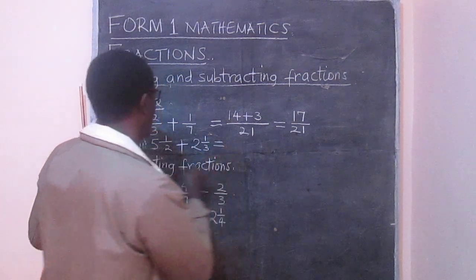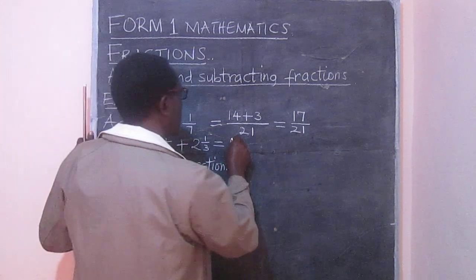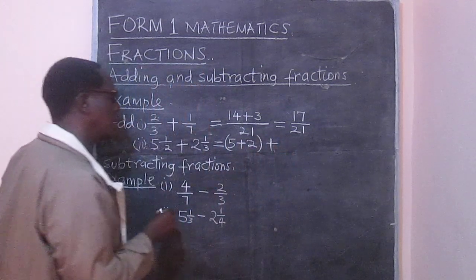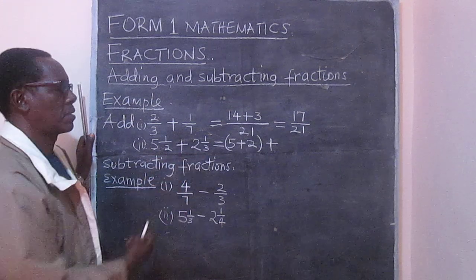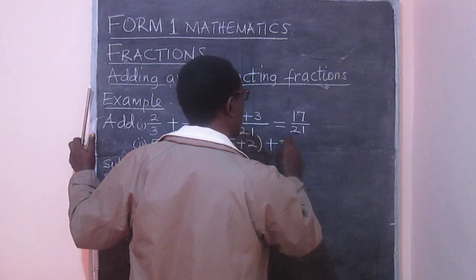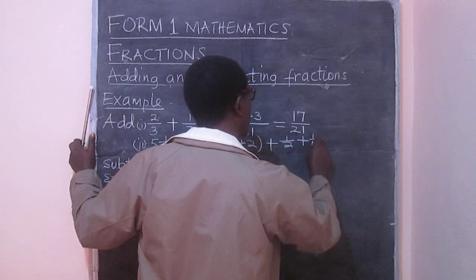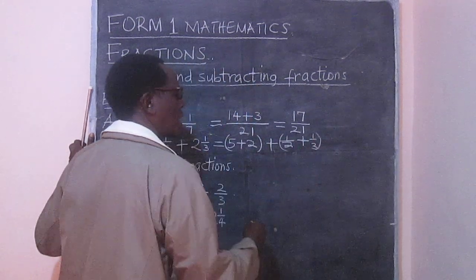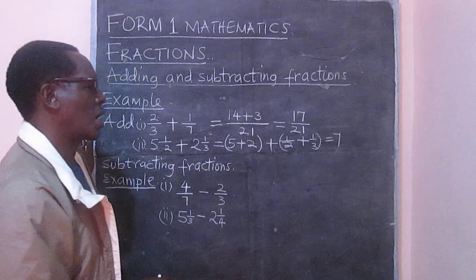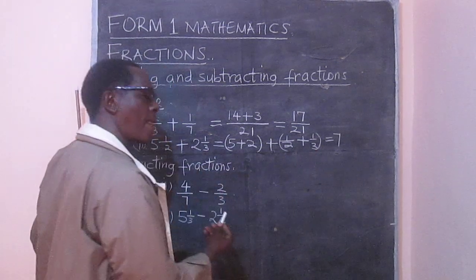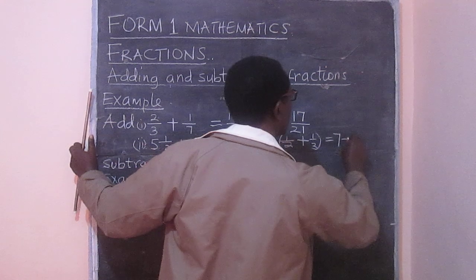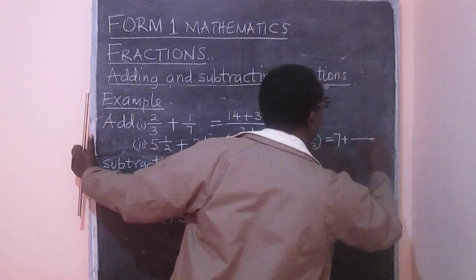And therefore we will get, we take the whole numbers here, 5 and 2, and that becomes 7. So we can say 5 plus 2, and then we add the fraction part, which is 1/2 and 1/3. This means it's 7, the 5 plus 2. And then we can get the LCM here. The LCM of 2 and 3 is 6.